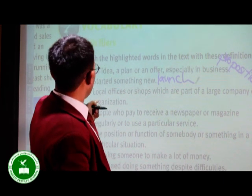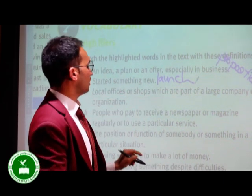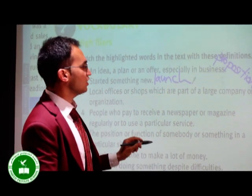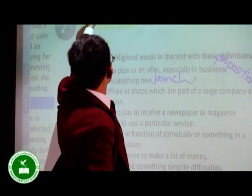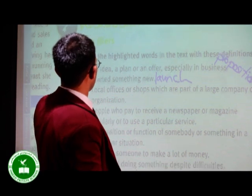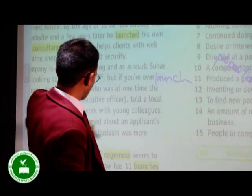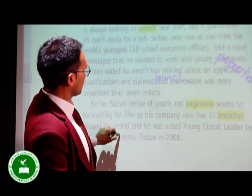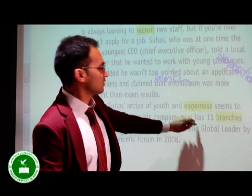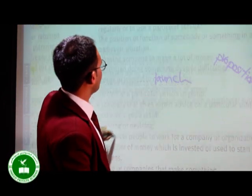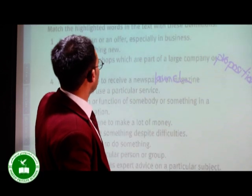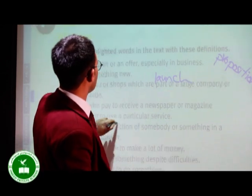Next word. Local offices or shops which are part of a large company or organization. Let's find the word for this. Local offices or organization. What do you think? Which one? Branches. Yes. Branches is local offices or shops. Let's write branches in here.